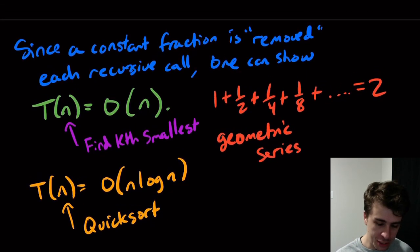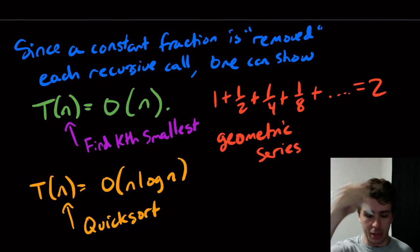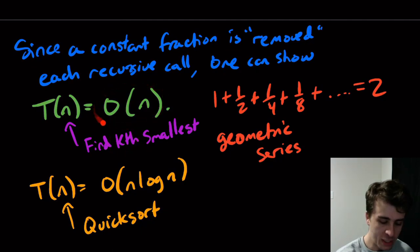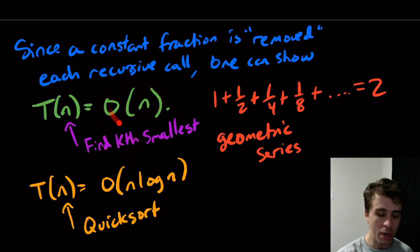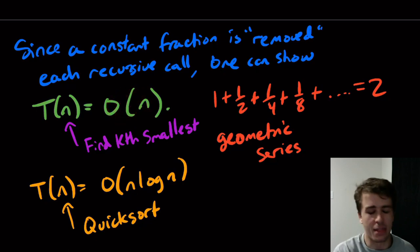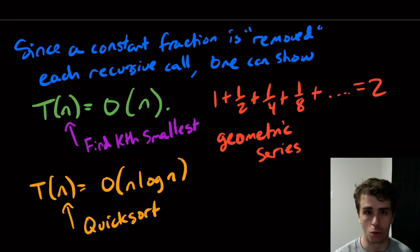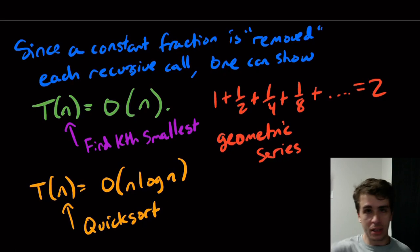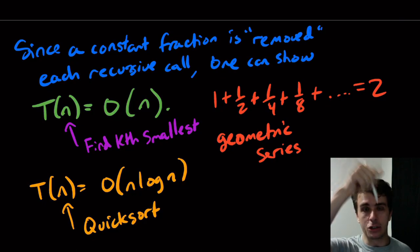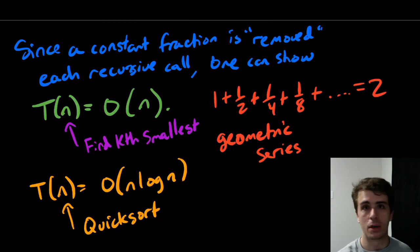The amazing thing is that the runtime has nothing to do with k whatsoever — given k in advance, you can find the kth smallest or kth largest in linear time without sorting the array at all. Please leave comments below, and as always, like and subscribe to the channel. There are links in the description for Patreon, PayPal, and the Discord server. See you next time.